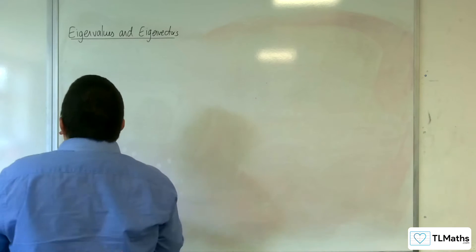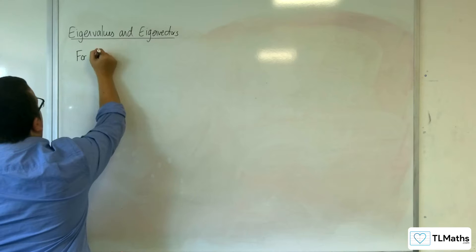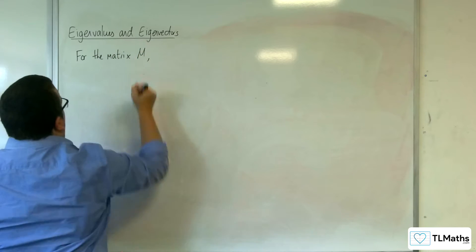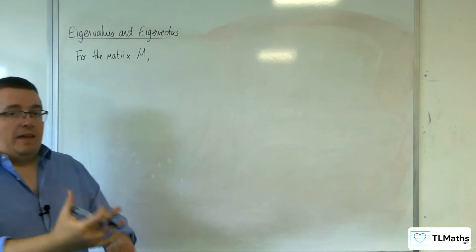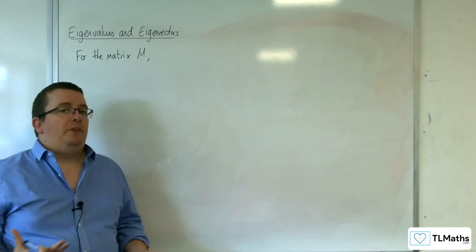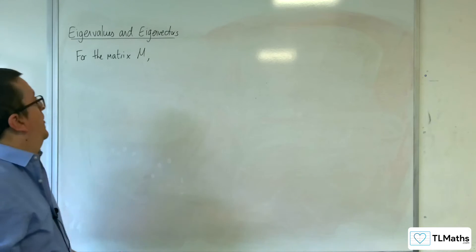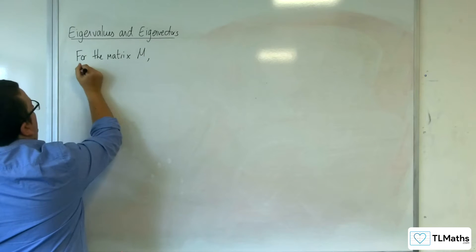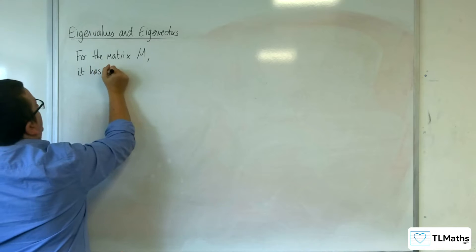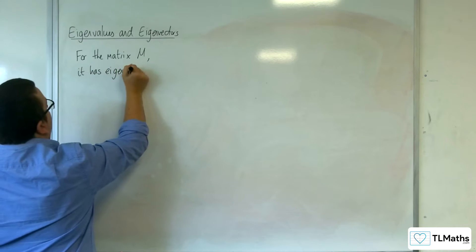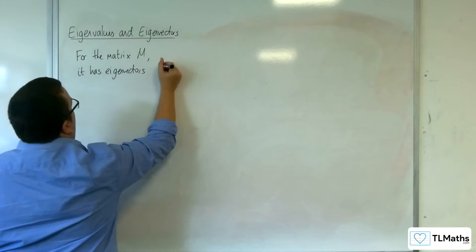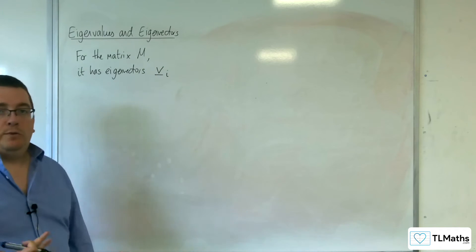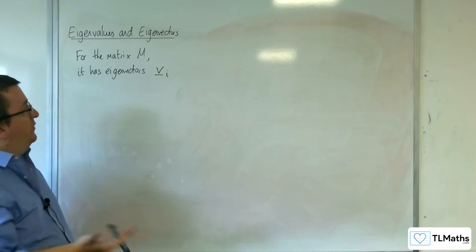So for the matrix M, if it has invariant lines and M represents a linear transformation, then M has eigenvectors, which we will identify as V_i — so you can have V1, V2, and V3, underlined of course, because they're vectors.